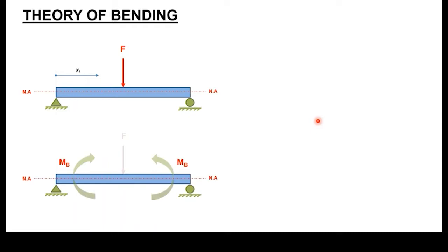The bending moment causes the structure to either bend inwards — so that would be sagging — or to bend outwards, which would be hogging. So sagging and hogging: this is essentially what will happen.